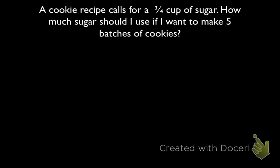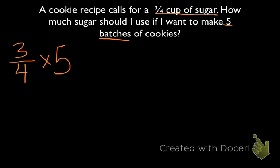Alright, let's check this. The problem says that a cookie recipe calls for 3 quarters cup of sugar. How much sugar should I use if I want to make 5 batches of cookies? First thing I want to do is represent this as a multiplication problem. So that would be 3 quarters of a cup per batch times 5 batches, giving me the equation 3 fourths times 5.